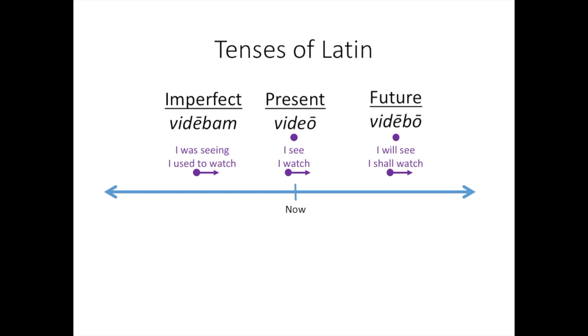In order to say the one time action in the past, we use the perfect: I saw or I have seen. We will learn these in chapter 12.